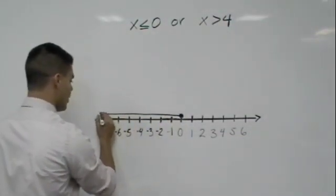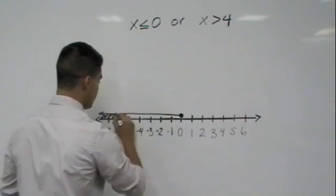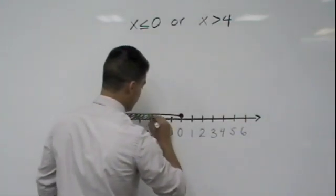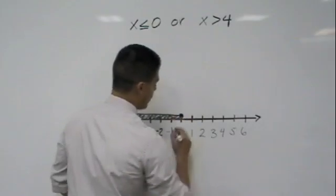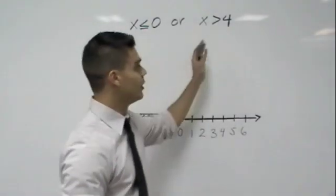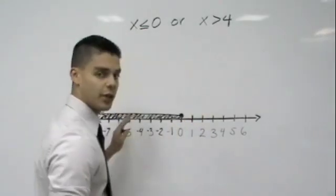So I draw my arrow that way. And I know because it's an OR problem, I can go ahead and shade right away. When we have OR problems, we don't have to wait for the other inequality. We can just go ahead and shade.